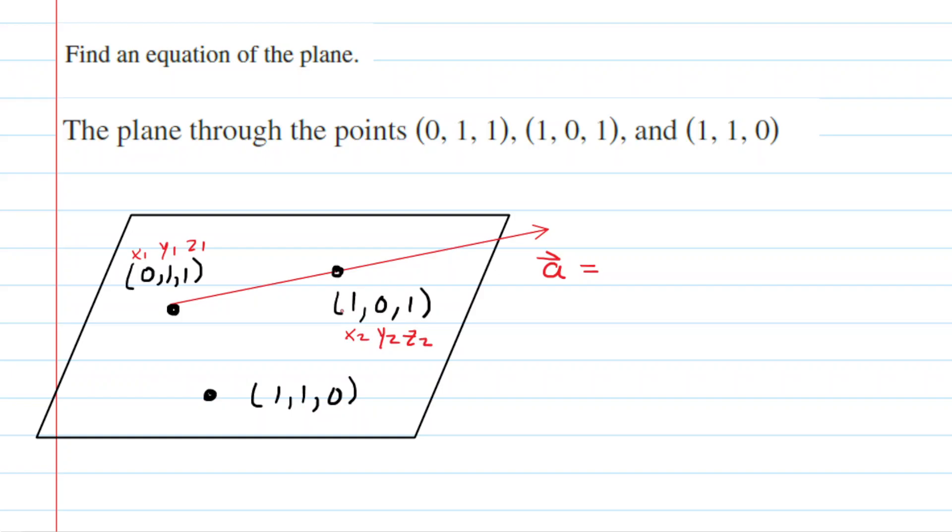And basically we're going to subtract the X components, Y components, and Z components. Just make sure that you subtract X2 by X1, Y2 by Y1, and Z2 by Z1. So for example, we're going to have 1 minus 0, and then 0 minus 1, and then 1 minus 1.